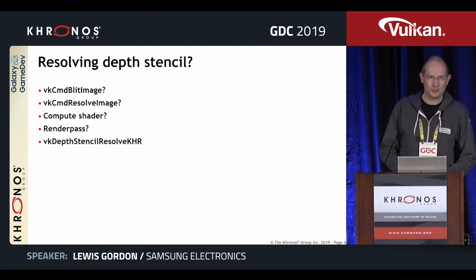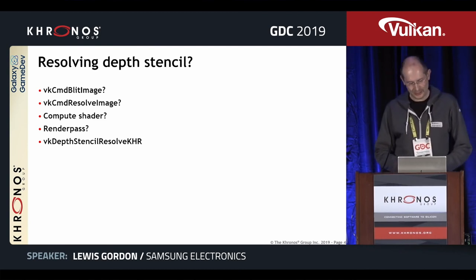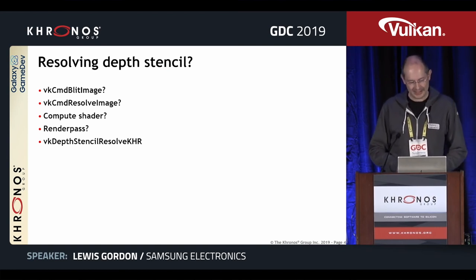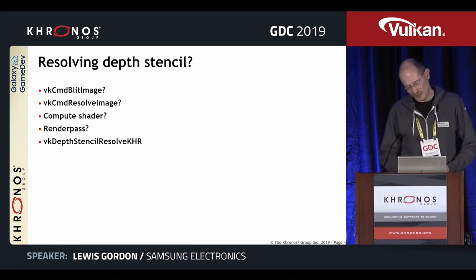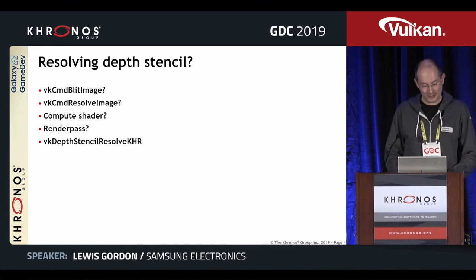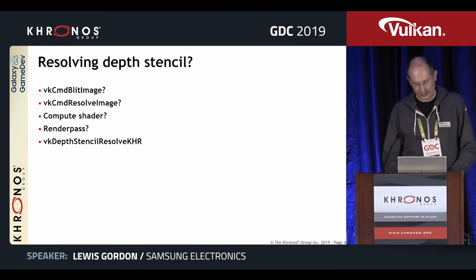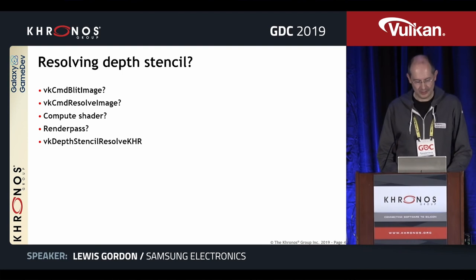Coming at this as a developer and end user, I went through the options most people would think of. First option: blit image — but the spec says you can't do a blit image on an MSAA target. Resolve image also sounds good, but resolve image excludes depth images. Compute shader and render pass are two possible options, but the problem there is you have to write out the MSAA data first, losing the benefit of resolving on-chip, and you'd have to write your own shaders. That's why we at Samsung started to promote trying to get this new extension into Vulkan.